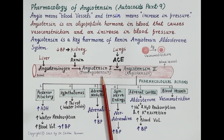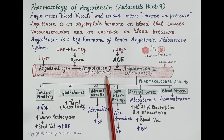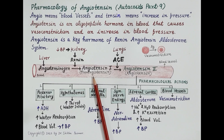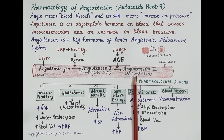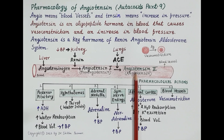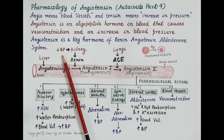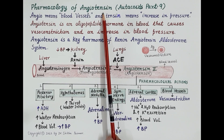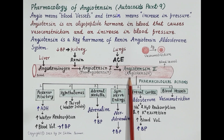Renin breaks angiotensinogen into angiotensin 1, also called pro-angiotensin, which is inactive. The lungs produce angiotensin-converting enzyme (ACE), which converts inactive angiotensin 1 into vasoactive angiotensin 2. Angiotensin 2 is the active form, and its production is enhanced by a fall in blood pressure.